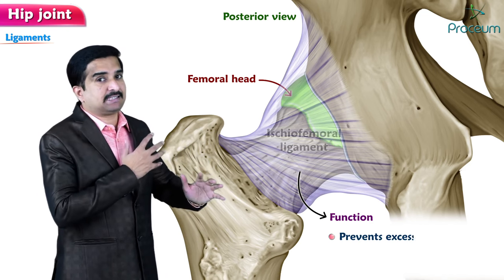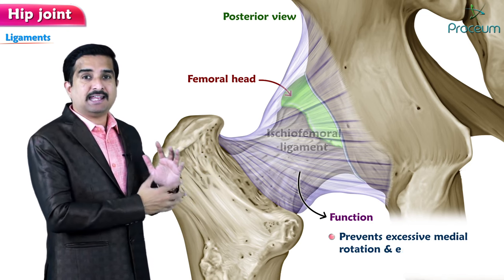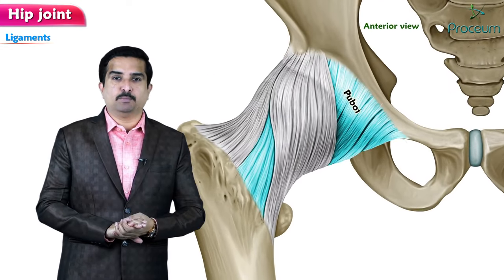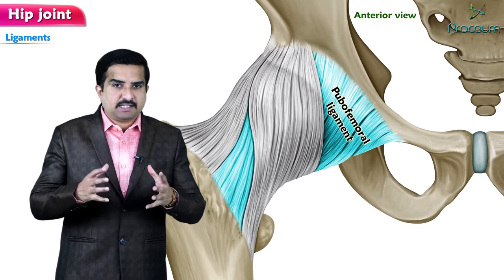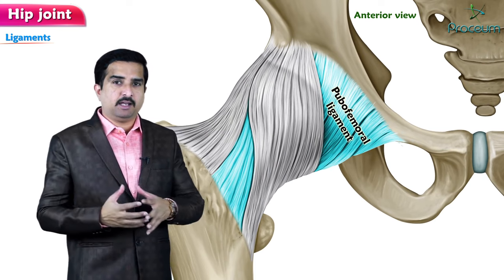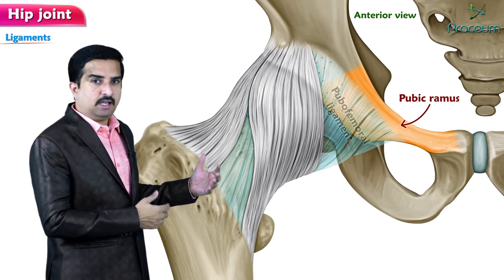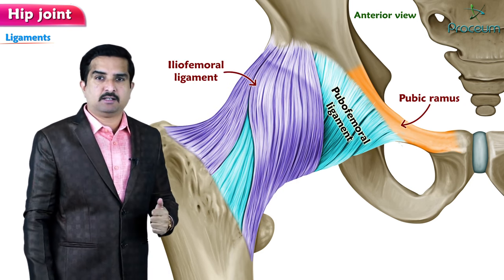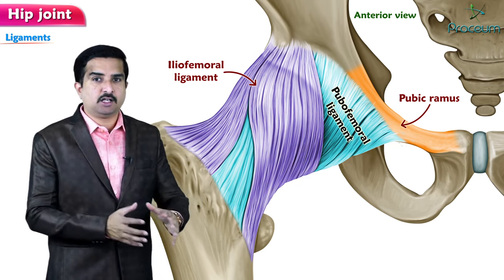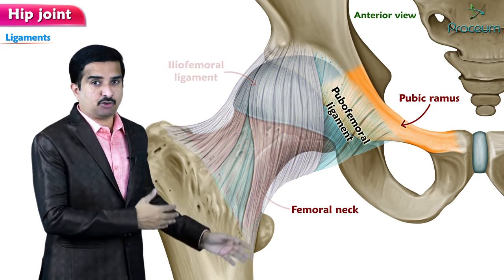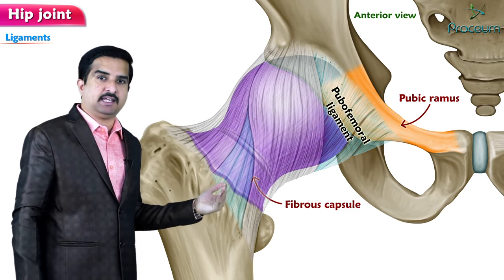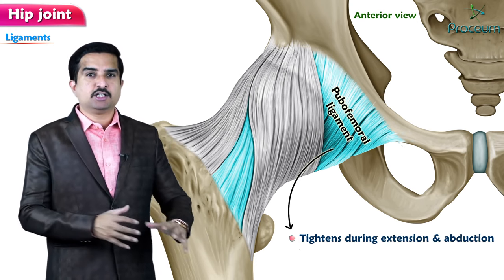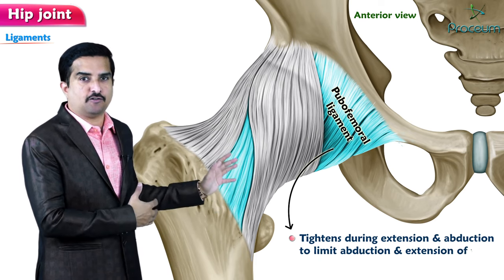The ischiofemoral ligament prevents excessive medial rotation and extension of the thigh. Next is the pubofemoral ligament. As the name suggests, it arises from the pubic ramus and merges inferolaterally into the iliofemoral ligament, and may also have an attachment to the femoral neck. It reinforces the fibrous capsule inferiorly and tightens during extension and abduction to limit abduction and extension of the thigh.